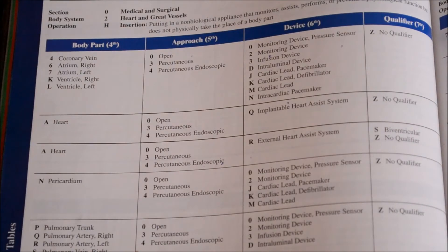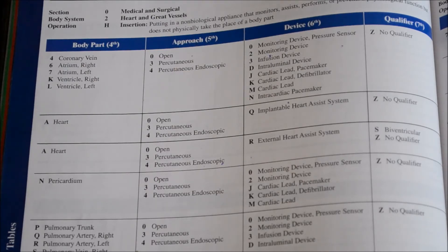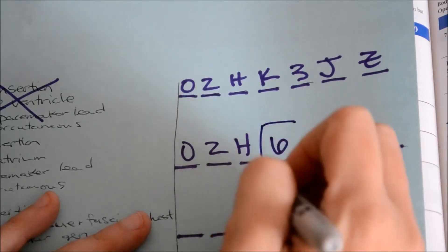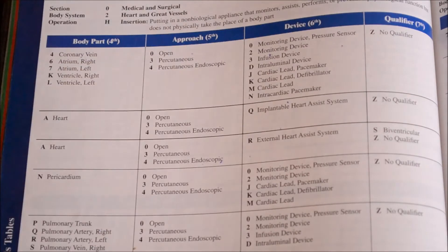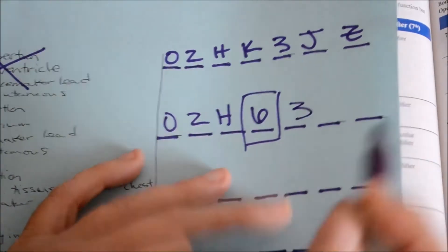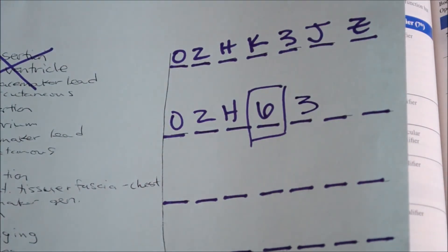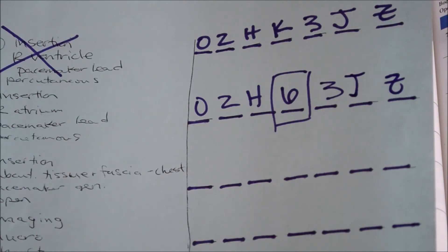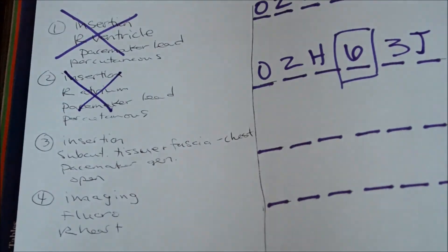We move on to our second code: insertion of the right atrium. We know we are in the same section, the same body system of heart and great vessels, and still using insertion because this is just another lead. The body part will change because PCS defines each section of the heart as a different body character — right atrium has its own character. Right atrium is a number 6, so we have O2H6. The rest of the code stays the same: percutaneous approach, cardiac lead pacemaker device (J), and no qualifier (Z). Those are the two codes for the lead section of the procedure.